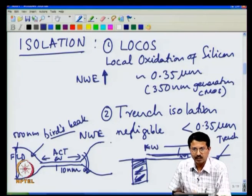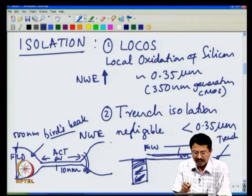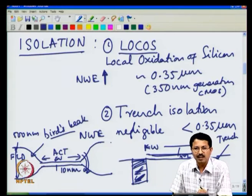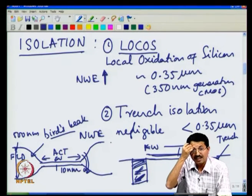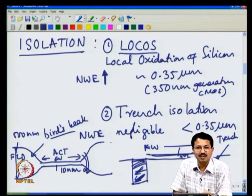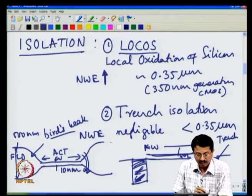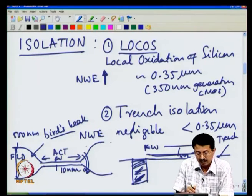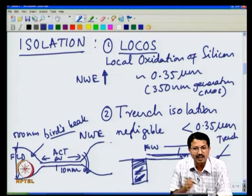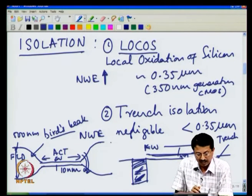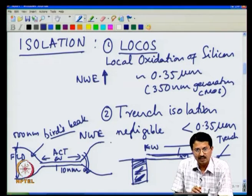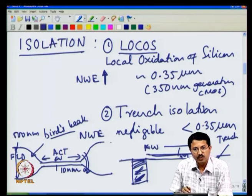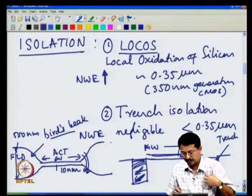In LOCOS, as the name suggests, oxidation is done locally on the silicon wafer by masking certain regions with a dense material such as silicon nitride. Oxygen does not diffuse through silicon nitride, so the active regions protected by nitride are not oxidized, while the rest is converted into thick field oxide. That is how you selectively create a thick field oxide region for isolation while preserving the transistor active region. Trench isolation is built by different means, but we will not go into those processing details.